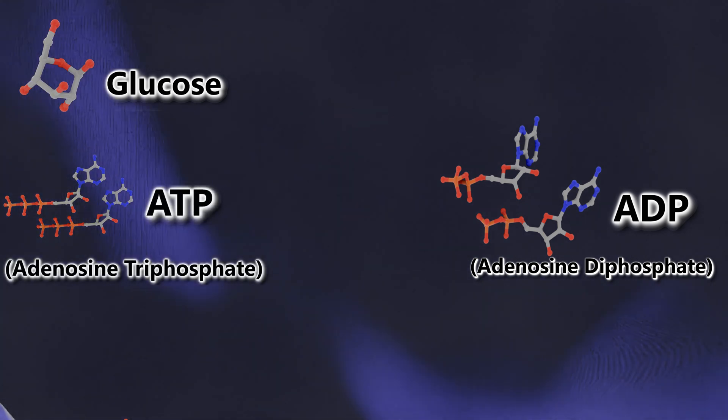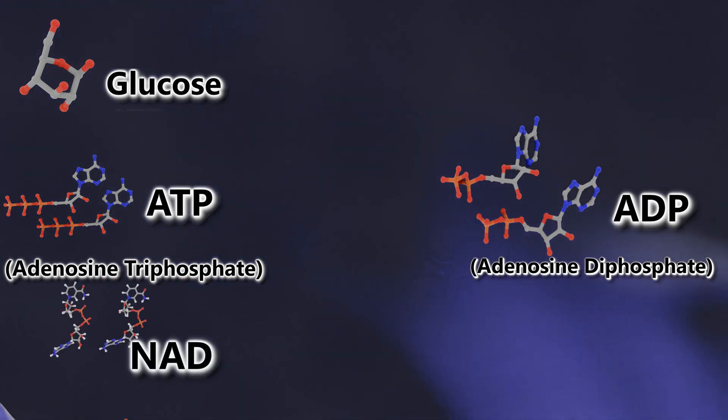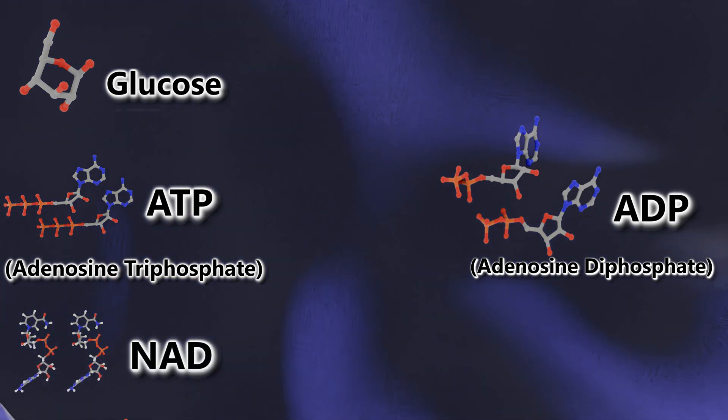Phosphorylate literally means to add a phosphate to a molecule. During this process, some of glucose's electrons will reduce another molecule called NAD, shown here, which plays a significant role in the last step of aerobic respiration, the electron transport chain.